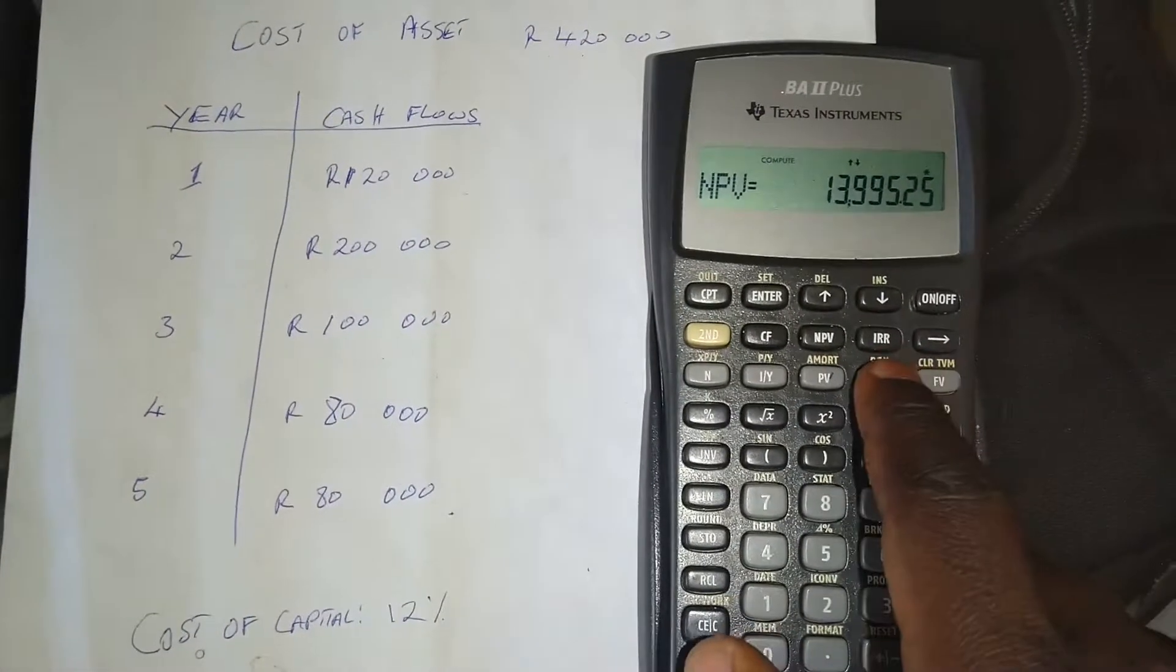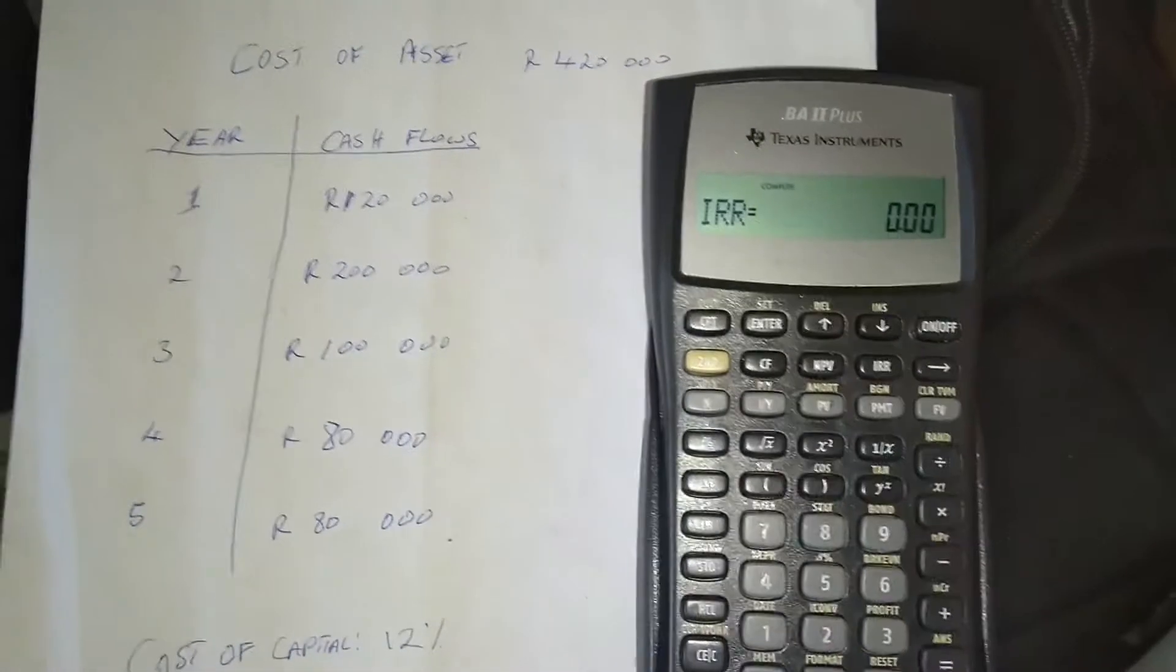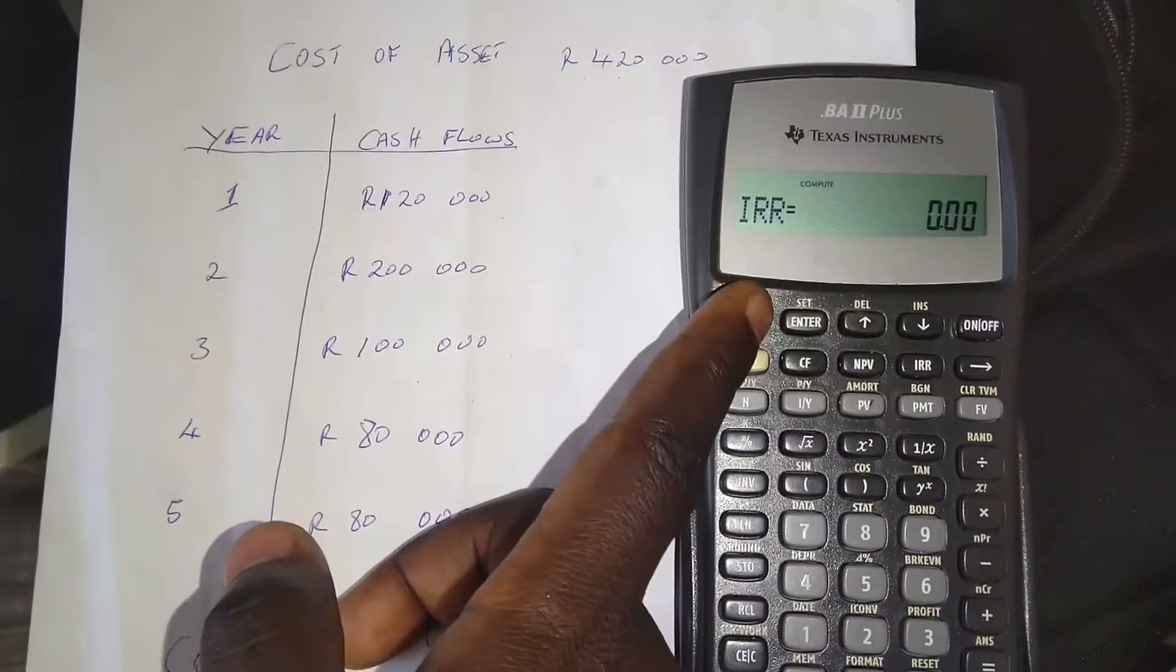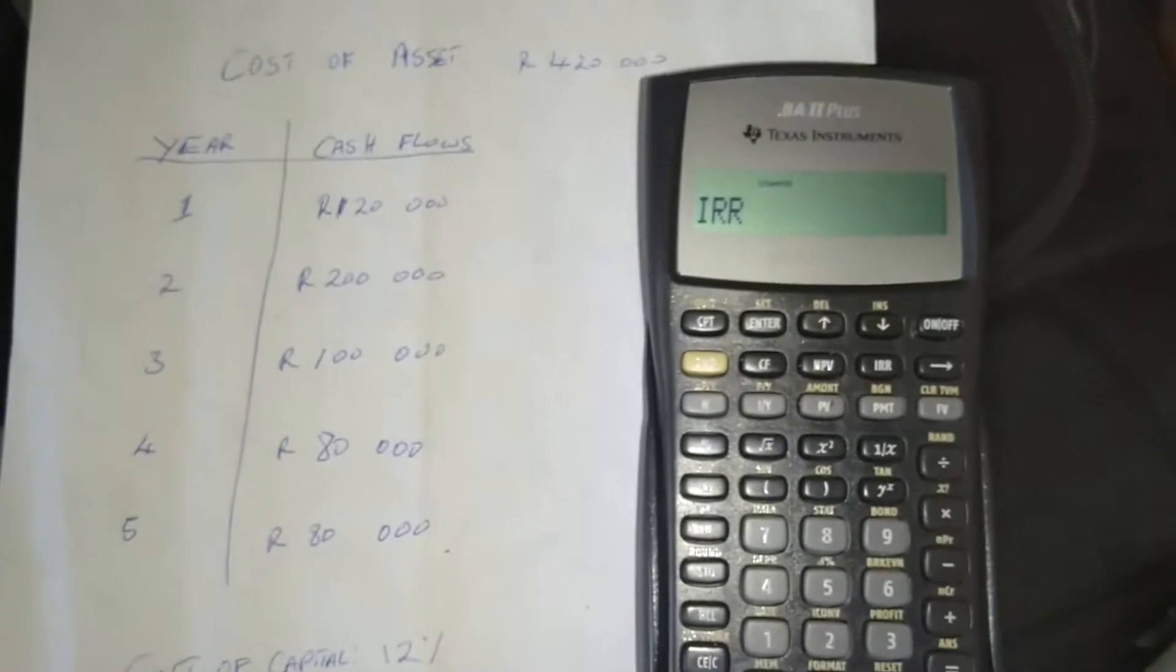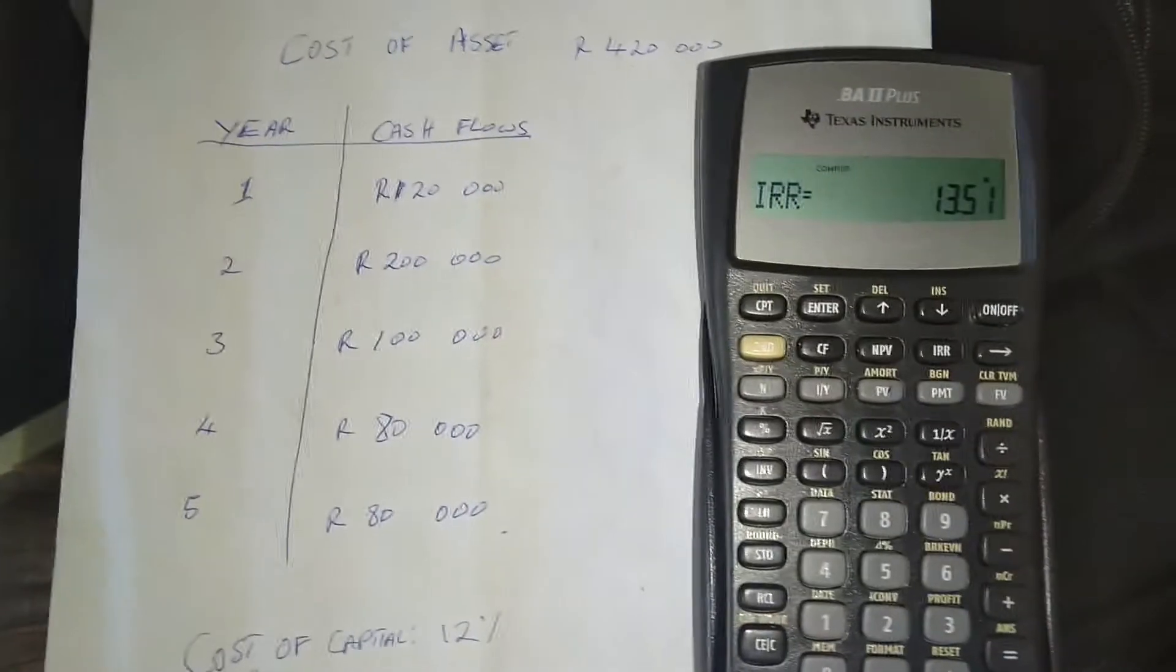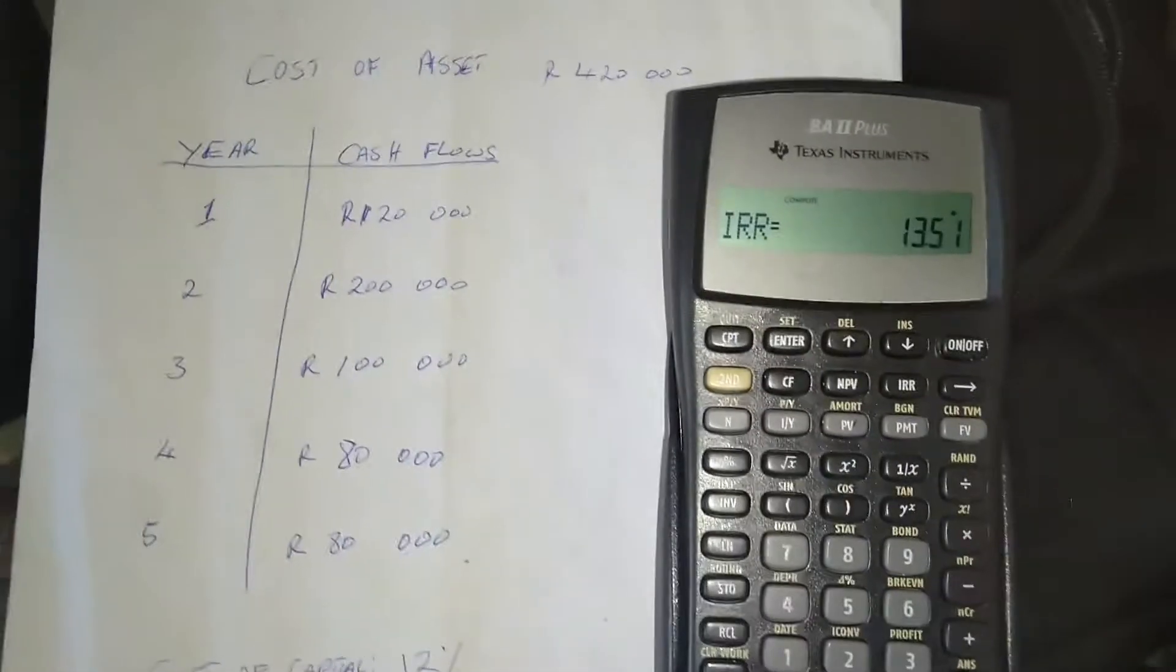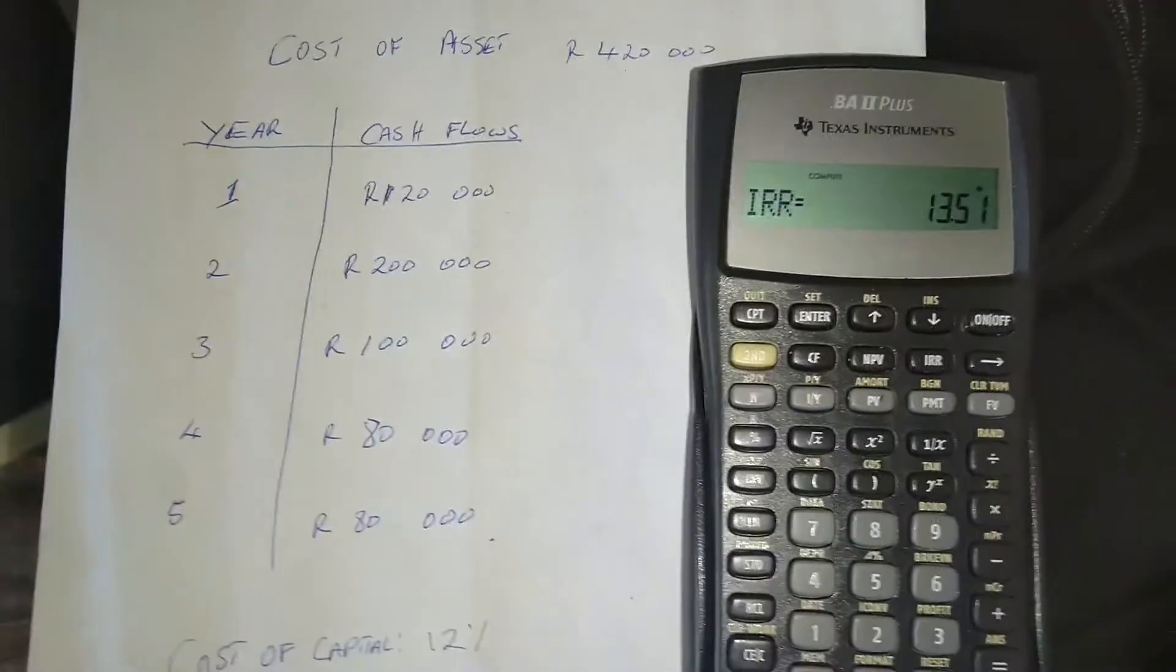You can see here where it's written IRR. You press IRR and then you press compute again, the top button compute. And you can see there it's computing and it has computed the IRR. It's 13.51%. And that is what the IRR is.